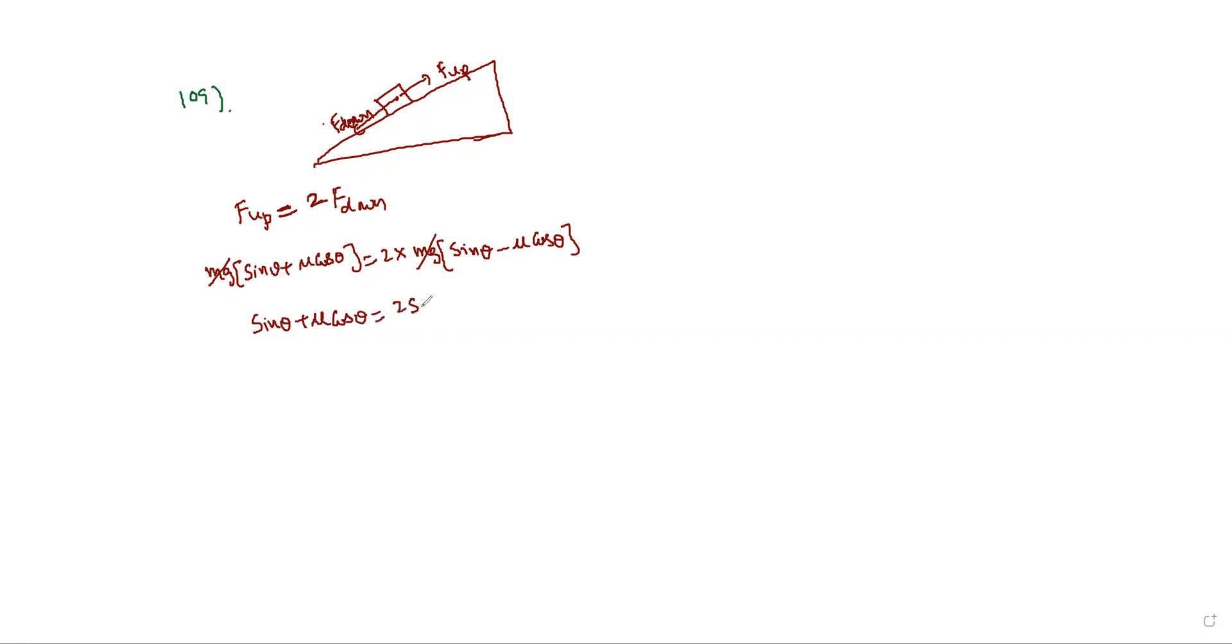So sin theta plus mu cos theta equals two times sin theta minus two mu cos theta. Rearranging: mu cos theta plus two mu cos theta equals two sin theta minus sin theta. Three mu cos theta equals sin theta.